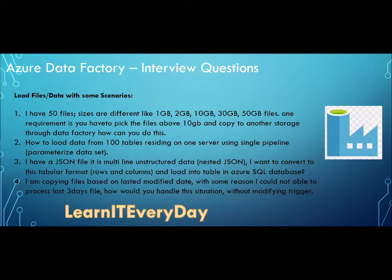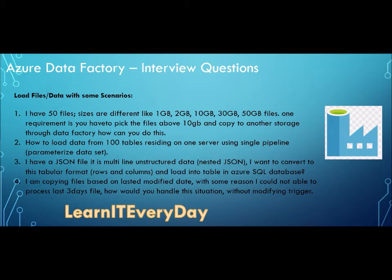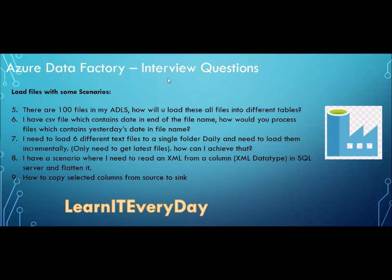I am copying files based on last modified date but could not process the last three days of files - how do you handle this? This depends on how you have designed your pipeline for incremental daily file pickup. The answer is that you can filter file names to find out which file belongs to which day. Always have a control or logging system to know when your job last ran successfully, so you know which files have not been processed and where to start.